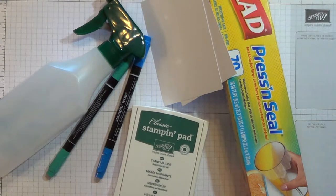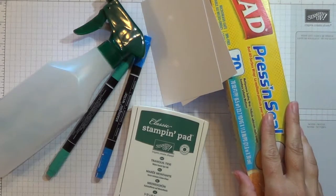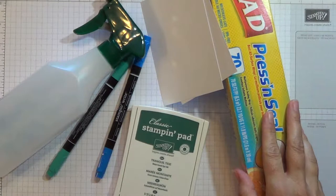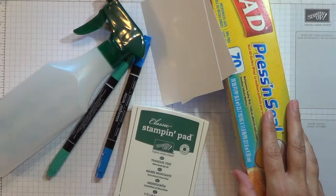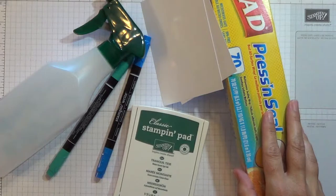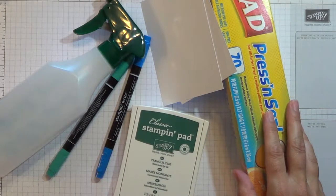These are the supplies that you need. I'm using Press and Seal today just because it's what I have in my stamp room. But you can use Saran Wrap, Glad Cling Wrap, whatever kind of plastic you have on hand. Even a small sandwich bag would work.